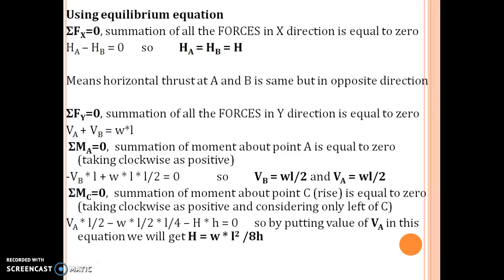Summation Fx equals 0 is the first equilibrium equation, that is summation of all the forces in x direction is equal to zero. So HA minus HB equals 0, that means HA equals HB, let it be H. This means horizontal thrust at A and B is same but in opposite direction. Summation of all the forces in y direction equals 0, that is vertical reaction VA plus VB equals downward loading W multiplied by L. Total UDL loading in downward direction is W into L.